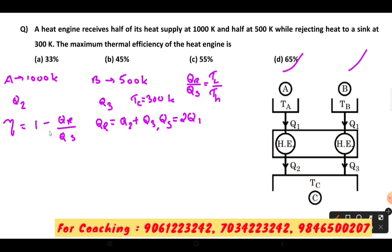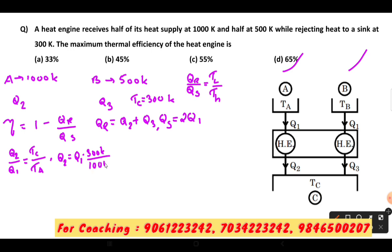The relation is: section A, Q2 divided by Q1 is equal to TC divided by TA. Q2 is proportional to TC divided by TA. So Q2 is equal to Q1 into TC/TA, which is 300 Kelvin divided by 1000 Kelvin. Therefore Q2 is equal to 0.3 Q1.